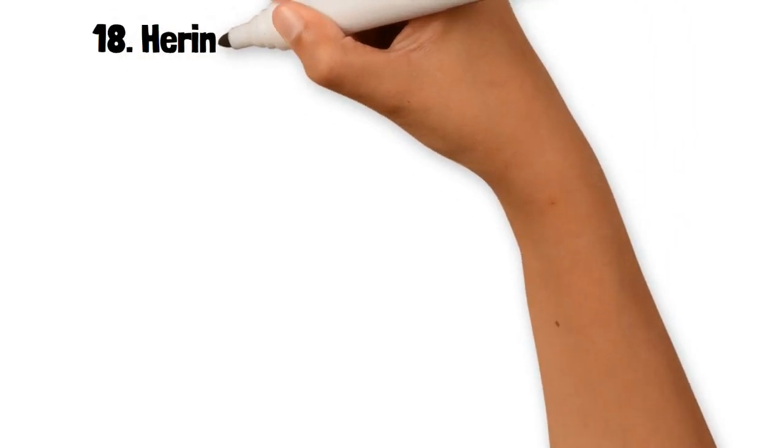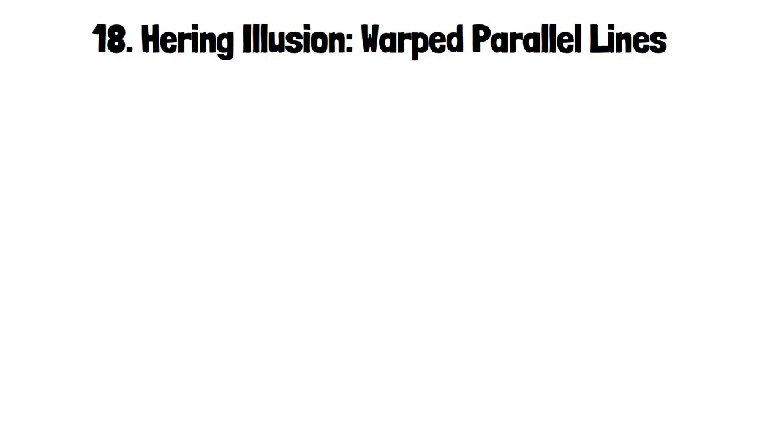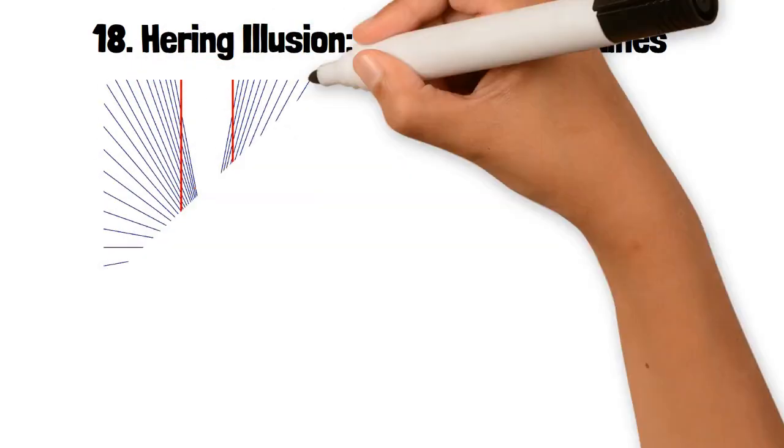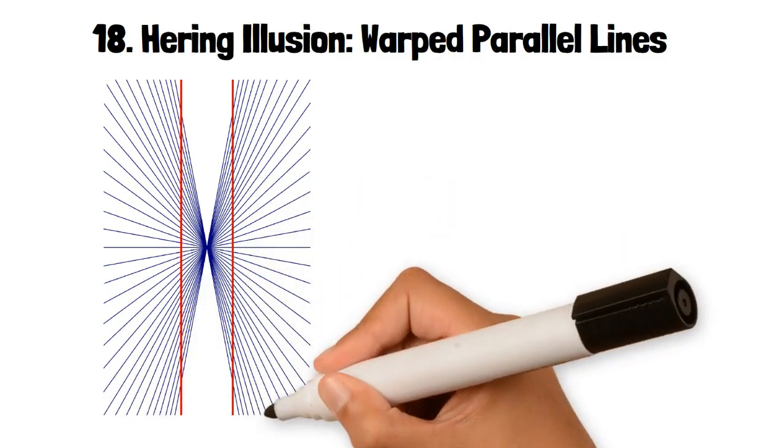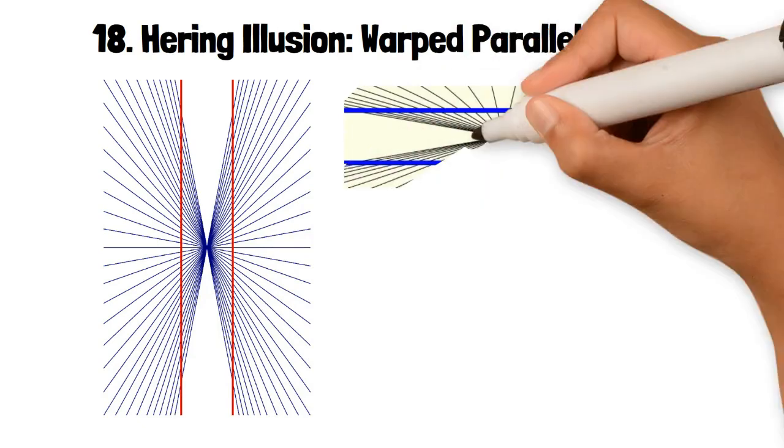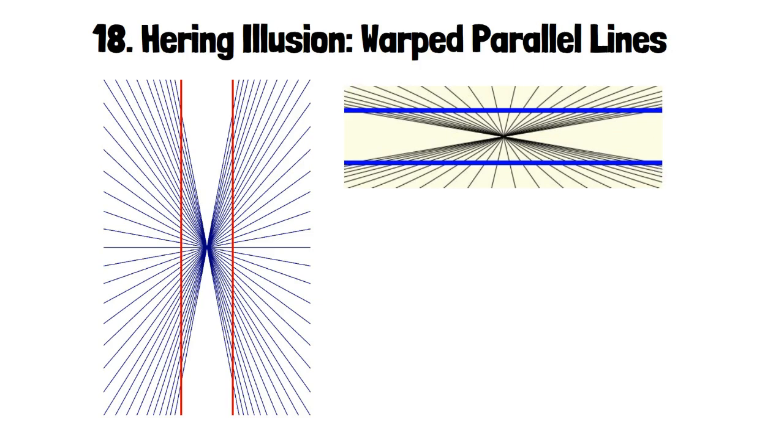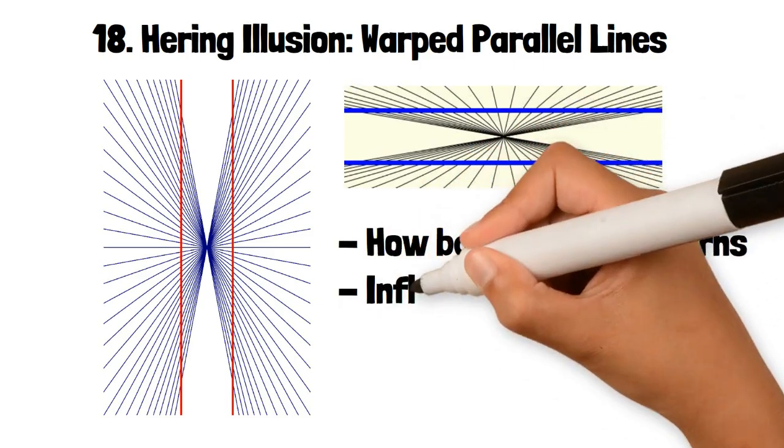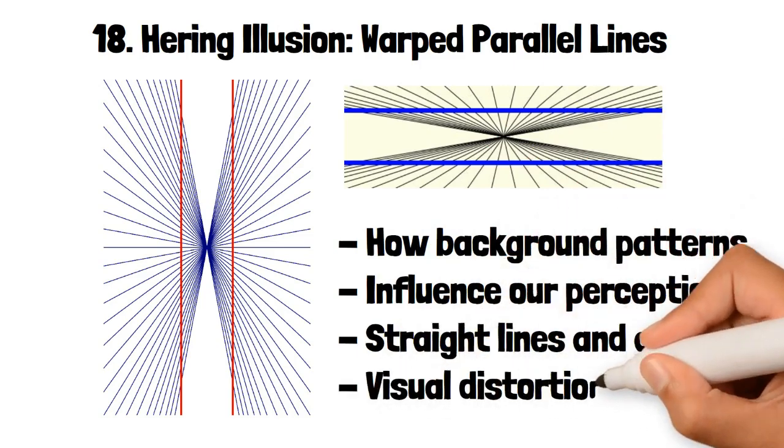18. Hering Illusion: Warped Parallel Lines. The Hering illusion involves two straight parallel lines that appear to bow outward due to the presence of radiating lines in the background. The illusion is caused by the brain's interpretation of depth and perspective which creates the appearance of curvature. This illusion is an example of how background patterns can influence our perception of straight lines and angles leading to visual distortions.